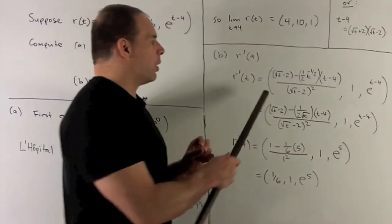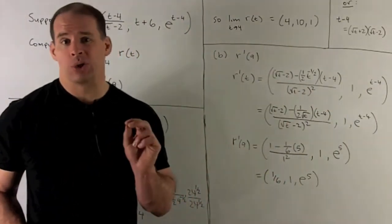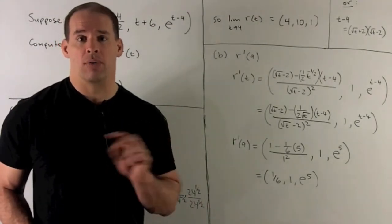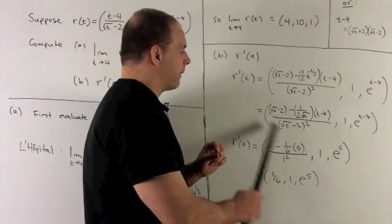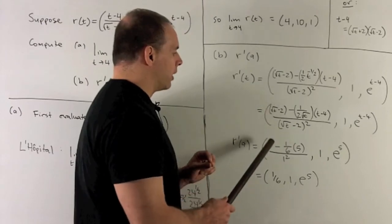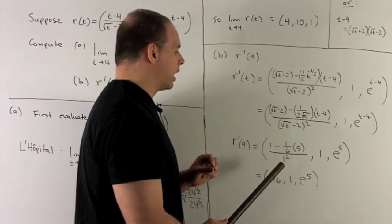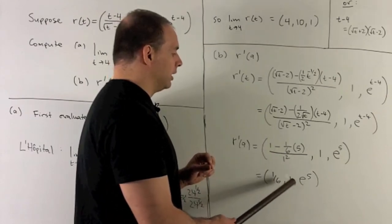In the x component, we need to do some work. This is the quotient rule: low d-high minus high d-low over low squared. We work it out. It's a big mess, but when you stick 9 in, we wind up with (1 - 1/6·5)/1². For my final answer, I get (1/6, 1, e^5).